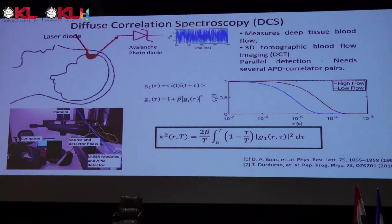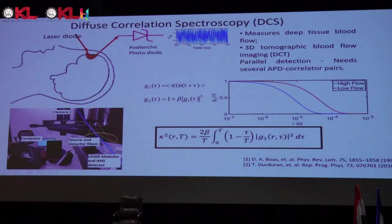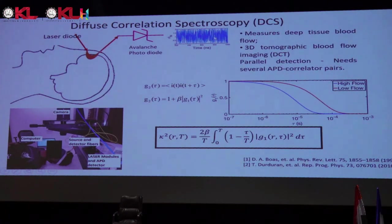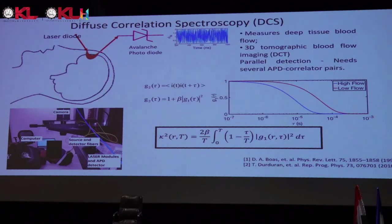There was a time when people threw this noisy data away, taking an average for functional near-infrared spectroscopy without caring about these fluctuations. But some people started using it and found you can actually extract blood flow from this noisy data. To do so you extract some parameters from this random noise. For uniform illumination you use speckle contrast, and for deep tissue where you focus the laser and collect deep-tissue photons, you use what is called diffuse correlation spectroscopy, or DCS.